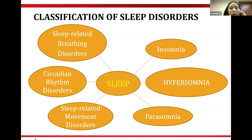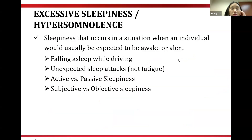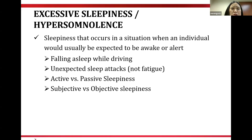Sleep disorders are categorized into six major classes: sleep breathing disorders, circadian rhythm disorders, sleep-related parasomnias, hypersomnia, and insomnia. Excessive sleepiness or hypersomnia is sleepiness occurring in situations where an individual would usually be expected to be awake or alert — like falling asleep while driving or unexpected sleep attacks. It is totally different from fatigue. We also need to distinguish active versus passive sleepiness and subjective versus objective sleepiness.